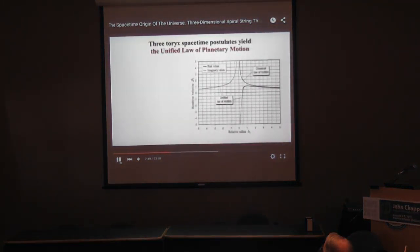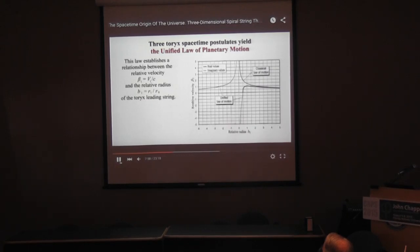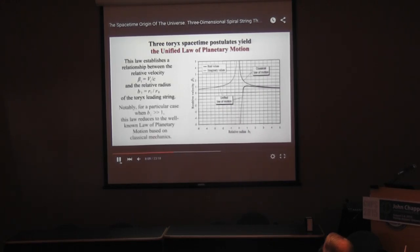The 2X spacetime postures yield a unified global planetary motion law. This law establishes a relationship between the relative velocity beta-1 and the relative radius B1 of the 2X leading string. For the particular case when B1 is much greater than 1, this law reduces to the well-known law of planetary motion based on classical mechanics.